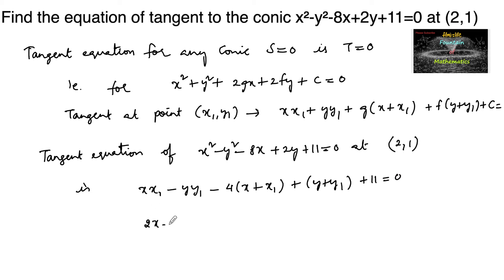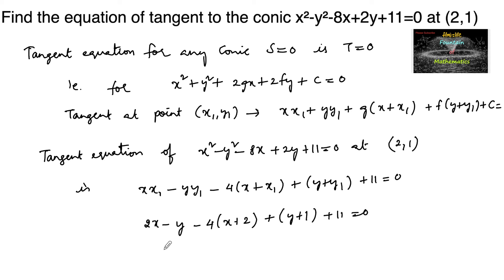So we get 2x minus 1·y minus 4(x plus 2) plus (y plus 1) plus 11 equals to 0. Expanding: 2x minus 4x minus y minus 8 plus y plus 1 plus 11 equals to 0.